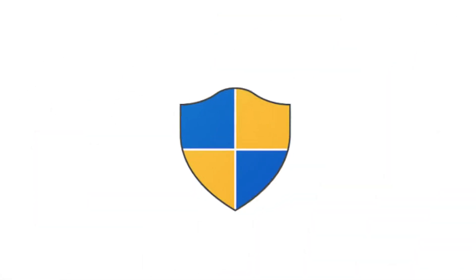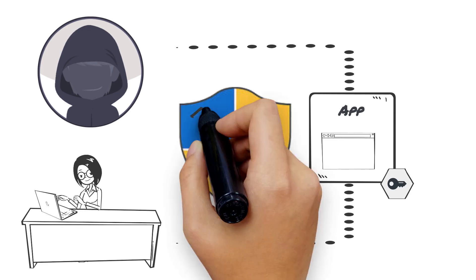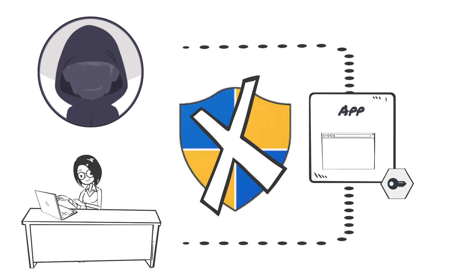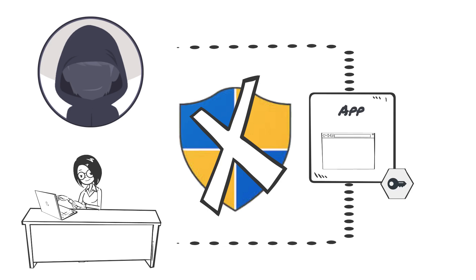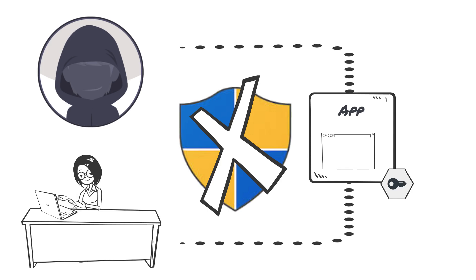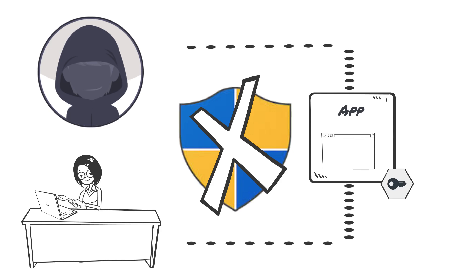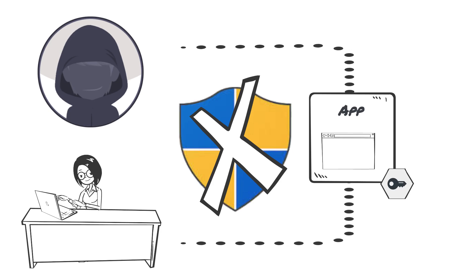The Achilles heel of UAC is that administrators and attackers impersonating them can easily disable or bypass it. This is one of the many reasons that users should operate with a standard user account and be granted only the rights required to perform their duties.